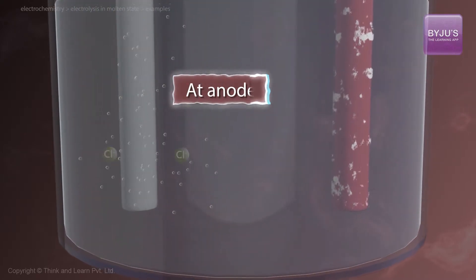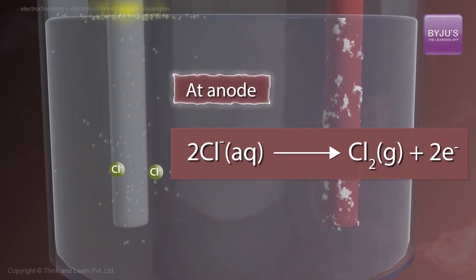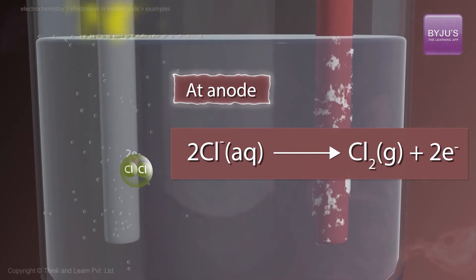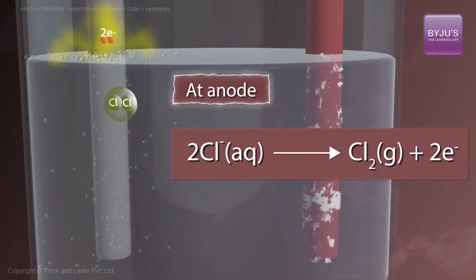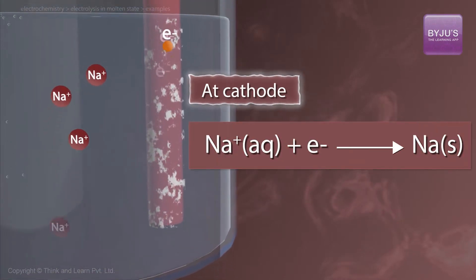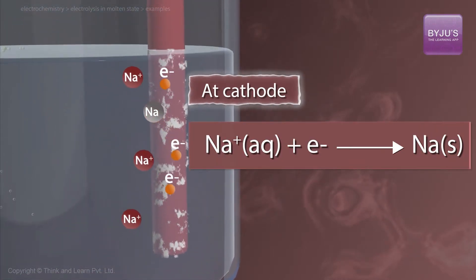At the anode, two Cl- ions convert into Cl2 gaseous and two electrons, which is oxidation. At the cathode, Na+ ions get converted into Na, which is reduction.